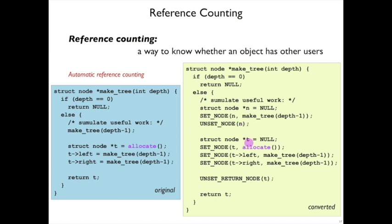Similarly here, I have a T variable. I initially set it to a newly allocated tree node, and I use setNode also to assign to the fields. The original code had regular field assignment, but in the converted code, to make this use of a pointer explicit, we have a setNode macro to do that.